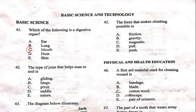Question 42 says: the type of joint that helps man to nod is A) gliding, B) hinge, C) pivot, D) saddle, E) satchel. A lot of people will pick B, which is hinge, but the correct answer is C, the pivot joint. Hinge joints allow bones to move in one direction — back and forth — but pivot joints permit rotatory movement of bones around a single axis. An example is the joint of the first and second vertebra of the neck, which allows the neck to move, and that is why the answer is option C.